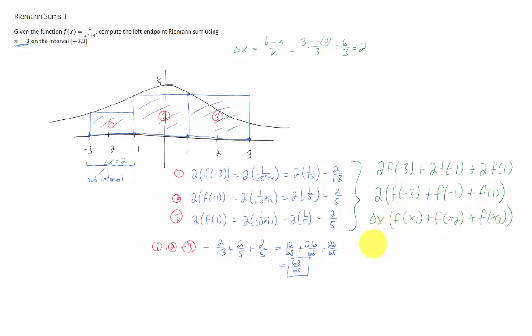And maybe we could have called this negative 3 x1 and this negative 1 x2 and this 1 x3. And then if we wanted to write this in a summation notation, we could sum from, say, i is 1 to 3. And we could write this as f of x sub i times delta x. This delta x, of course, could be pulled out in front as well.